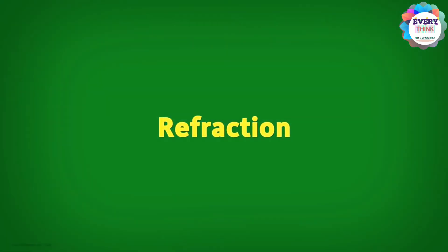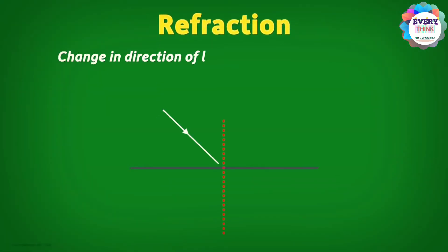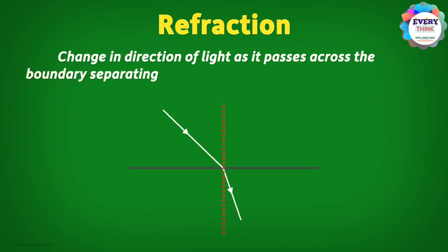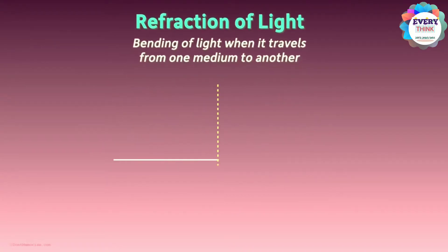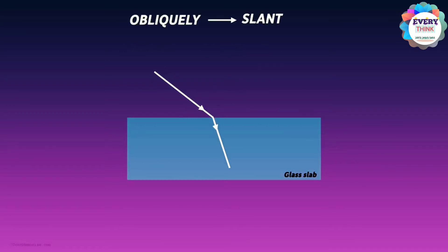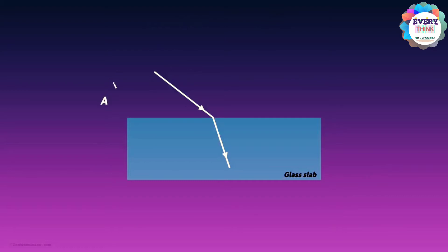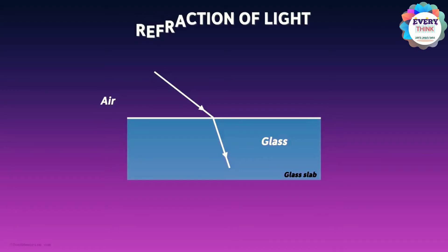What is refraction? Refraction is the change in direction of light as it passes across the boundary separating two media, caused by its change in speed. If light is incident at one angle, it goes through at another angle. Consider a transparent object such as a glass slab. When light travelling through air is incident obliquely on the surface of the glass, it will bend at the boundary of the two media — air and glass. This bending of light at the boundary is what we call refraction of light.